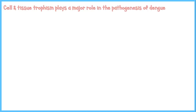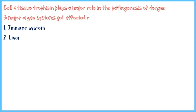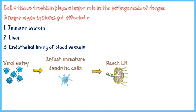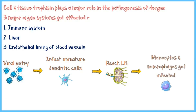Cell and tissue trophism of the virus plays a major role in the pathogenesis of dengue infection. Three major organ systems are affected: the immune system, the liver, and the endothelial lining of blood vessels. During a mosquito bite, the virus enters through the skin and infects immature dendritic cells located in the skin. These infected dendritic cells reach the lymph nodes, where monocytes and macrophages are recruited to halt the infection. However, these cells also get infected by the virus.